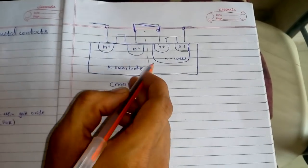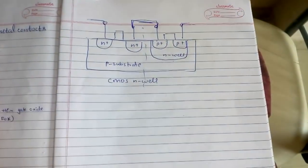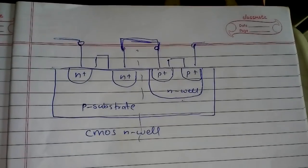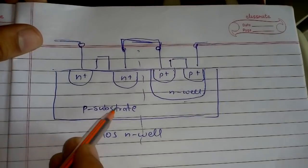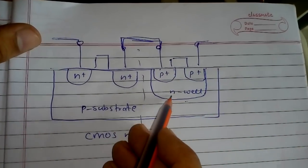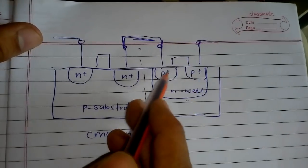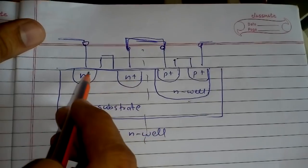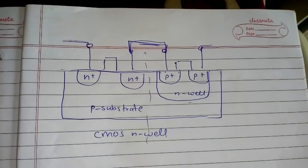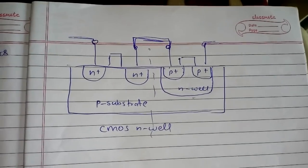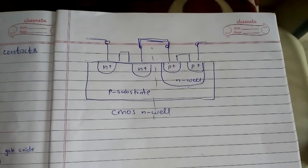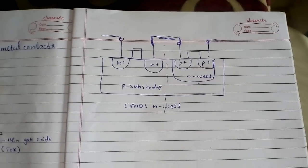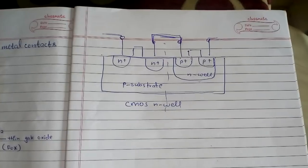For the p-well process, use an n-substrate instead, and create a p-well within it. In the p-well you have n+ impurities, and outside it you have p+ impurities. All the fabrication steps remain the same. This covers NMOS, PMOS, and CMOS fabrication — reading through the CMOS fabrication once will make it all clear.